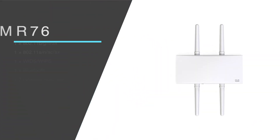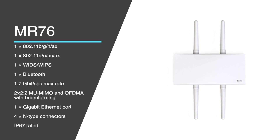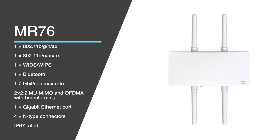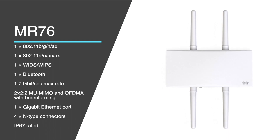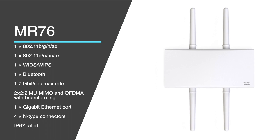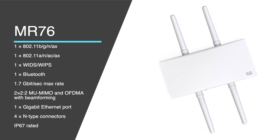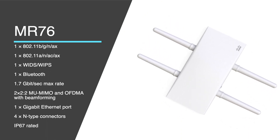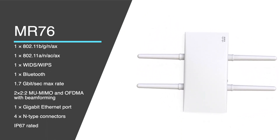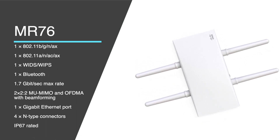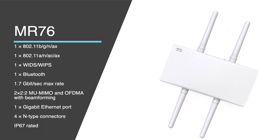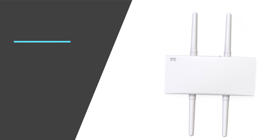Moving to the MR76, this AP has the same radios as the previous one, but the difference is 2x2 and 2 spatial streams for MU-MIMO, so the max rate goes down to 1.7 Gbps. Since it's an outdoor AP, it has N-type connectors for external antennas. The main element for this AP is the rugged industrial design for outdoors — it has an IP67 rating for water and dust resistance. This device is similar to the MR36 but with better speed and outdoor capability, making it great for outdoor campuses, industrial environments, and point-to-point links.